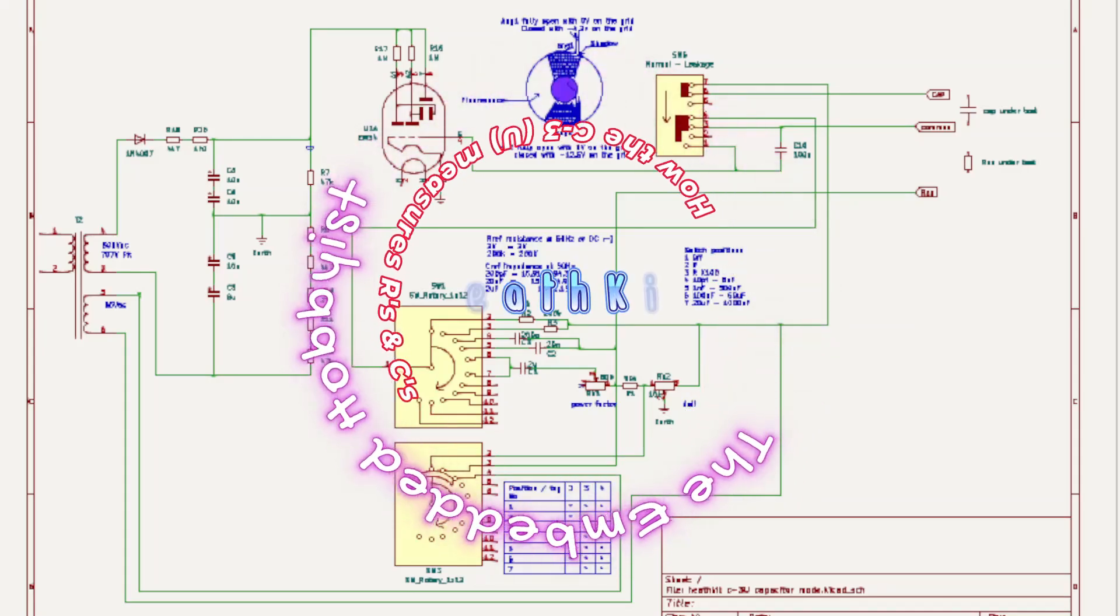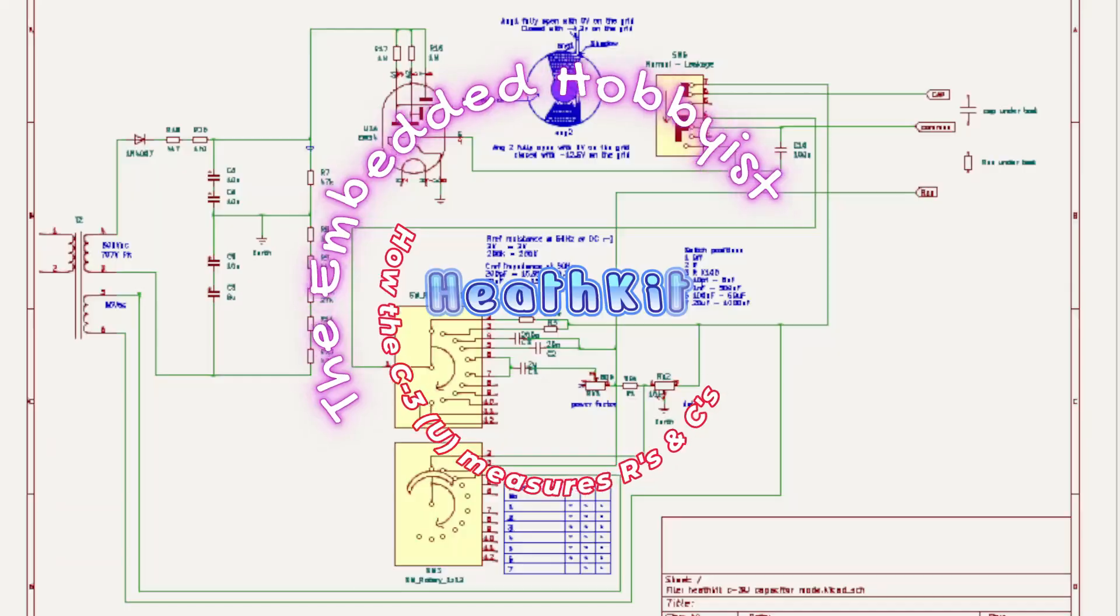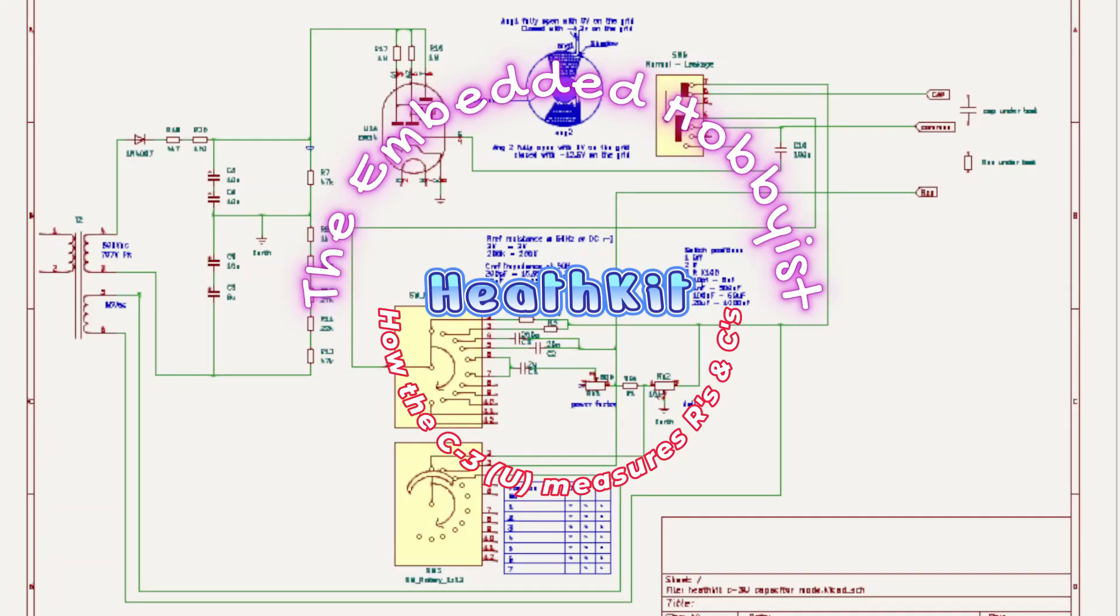Welcome back to my channel. We're going to have a quick look at how the Heathkit C-3, brackets U if you're in England, measures resistors and capacitors. So let's get at it.